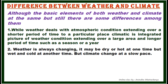Weather is always changing — it may be dry or hot at one time but wet and cold at another. Weather can change frequently; for example, it can be raining in the morning and sunny by afternoon. But climate changes at a slow pace. If a region has a monsoon type climate, it will not convert to desert, tundra, or subtropical climate overnight — it takes a very long period to change.